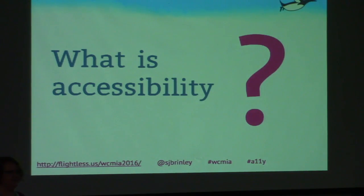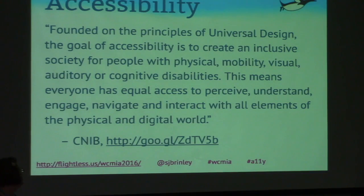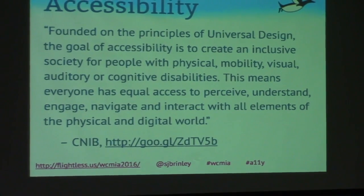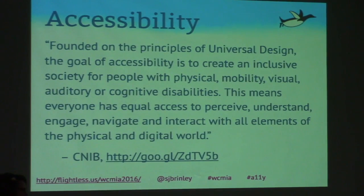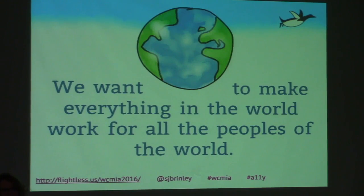The first thing about accessibility is: what is accessibility? It says it right in the name — access! There's this definition from CNIB, the Canadian National Institute for the Blind: founded on the principles of universal design, the goal of accessibility is to create an inclusive society for people with physical, mobility, visual, auditory, or cognitive disabilities. This means everyone has equal access to perceive, understand, engage, navigate, and interact with all elements of the physical and digital world.